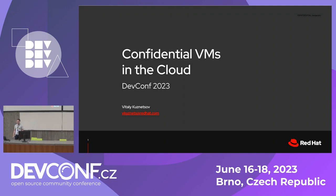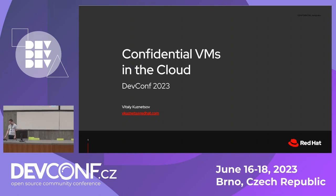Hello everyone. My name is Vitaliy. I am from the virtualization engineering team at Red Hat, and normally I work on various public clouds and third-party hypervisors, making sure Linux is the first class citizen there. I am also a sub-maintainer in KVM, working on things like Hyper-V Enlightenment and various x86 things. Today I'm going to talk about supporting the new thing in the cloud — confidential VMs — and what we can, should, or must do in Linux to make this all work.